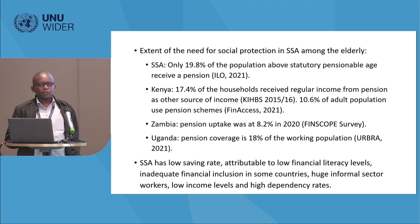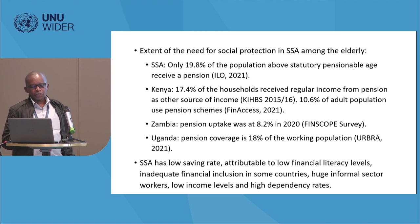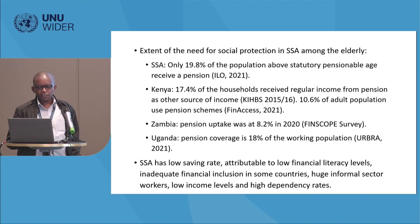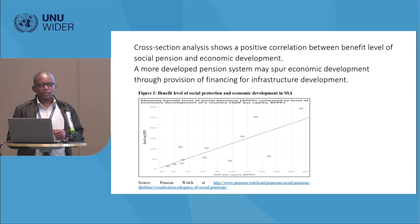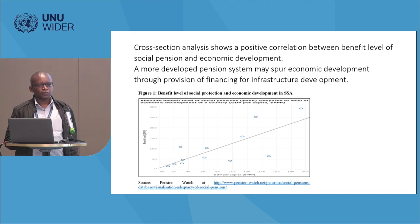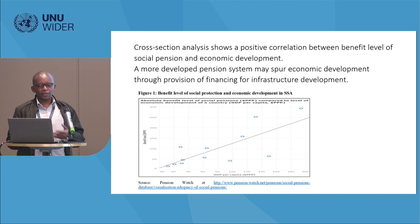The characteristics of sub-Saharan African countries also come in: savings rates are low, there are low financial literacy levels, and financial inclusion also tends to be low — though recently technology using mobile banking has helped address this. There is also the huge informal sector, low incomes, and high dependence rates. A cross-sectional analysis between the benefit level of social pension and economic development shows a positive association — a more developed pension system may inspire economic development through provision of financing for infrastructure development.